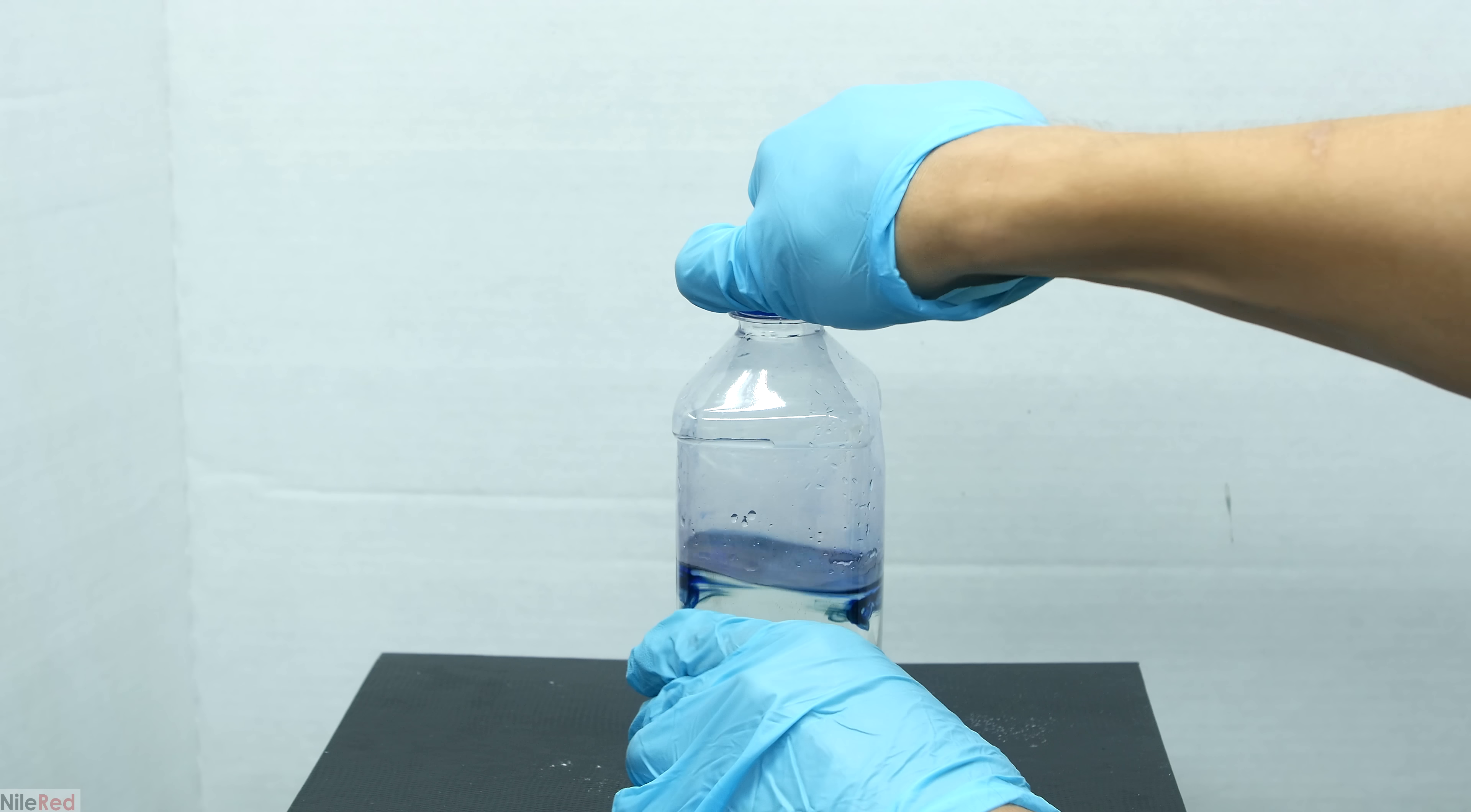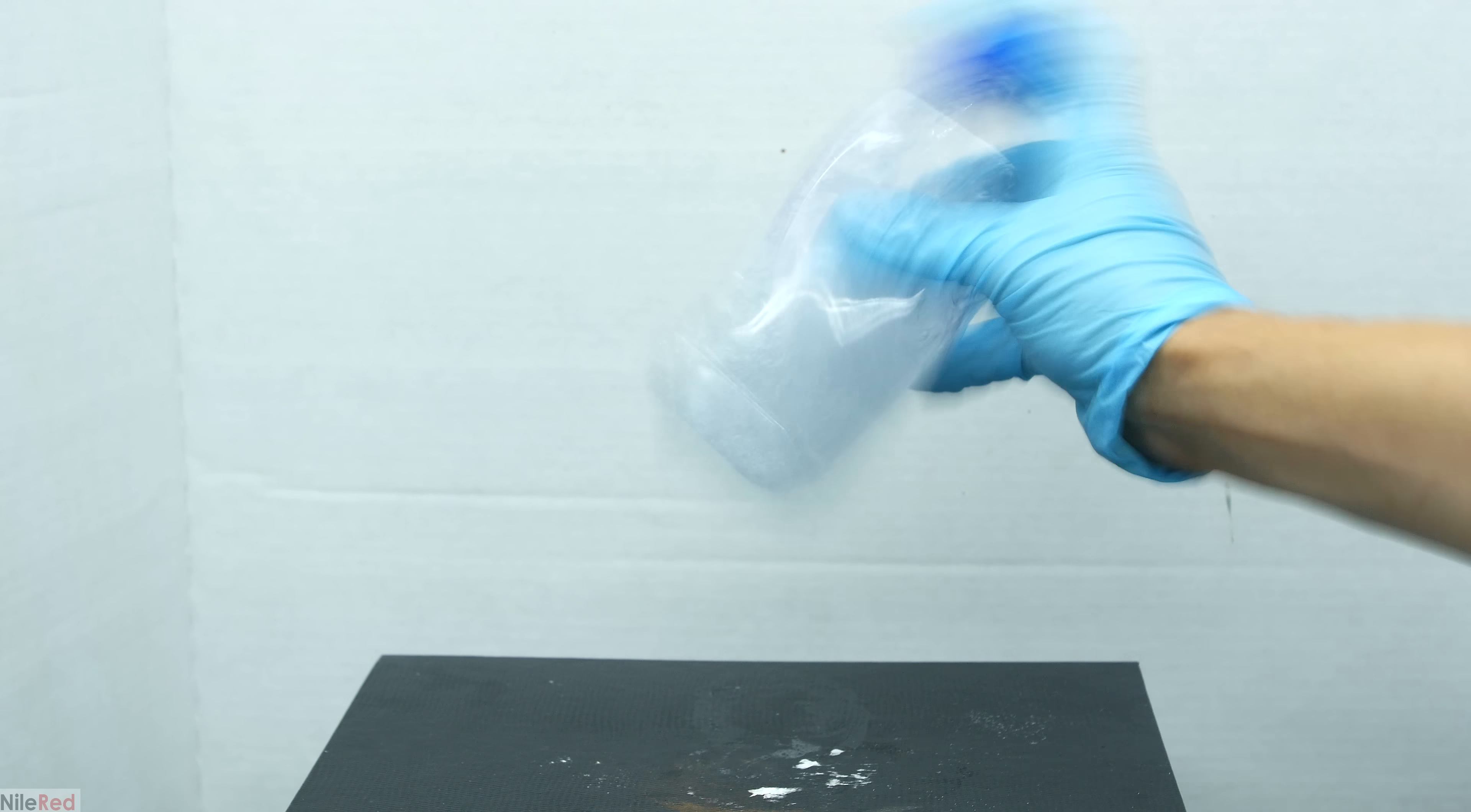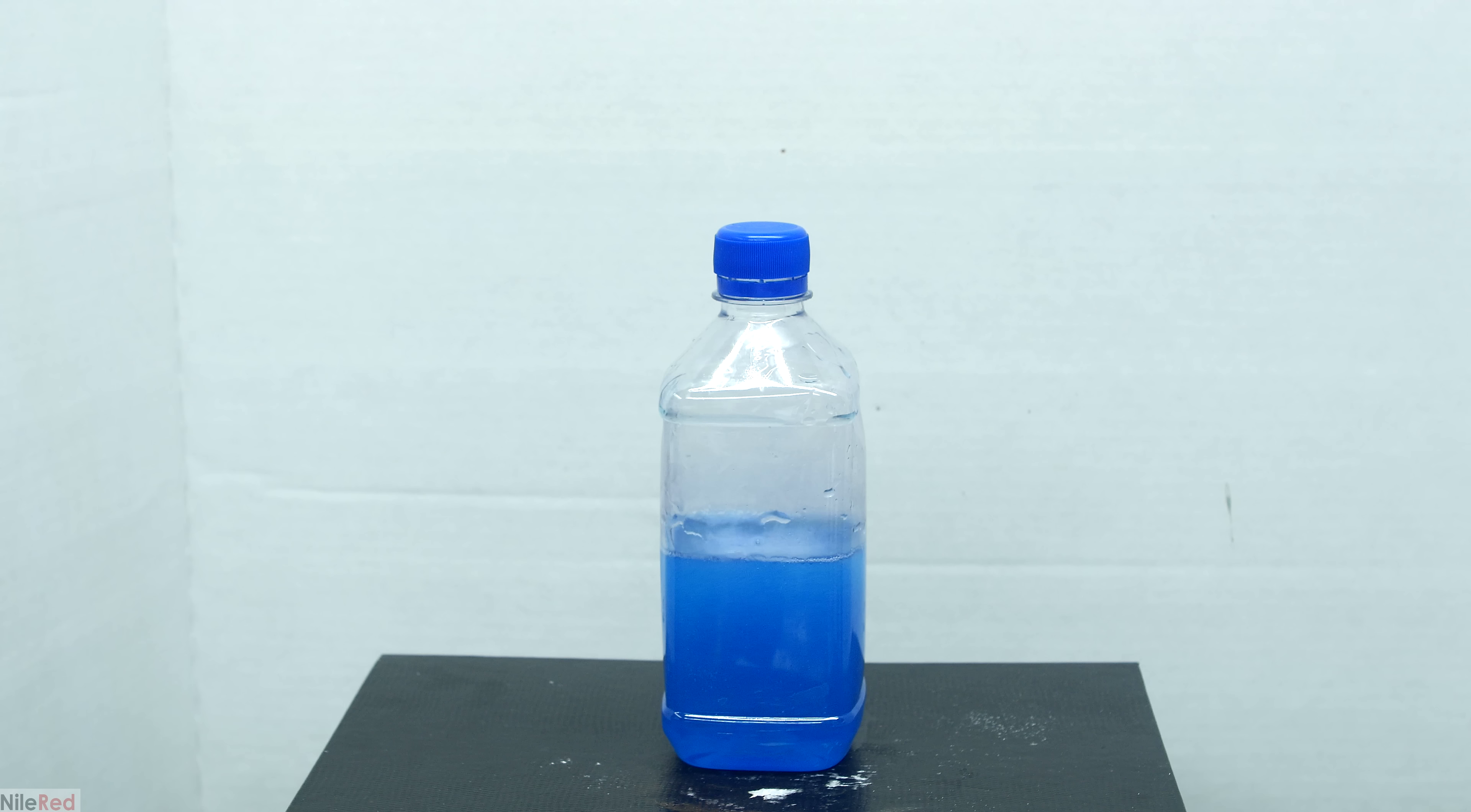The topic of today's video is the blue bottle demonstration. It's a pretty cool demonstration where we start with a colorless solution and when we shake it, it turns blue. If we then leave it somewhere undisturbed, the blue color will disappear and we'll be back with a colorless solution. We're going to first prepare the demonstration and then talk about how it works.